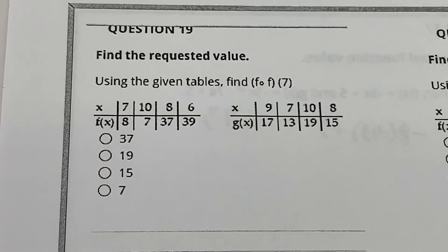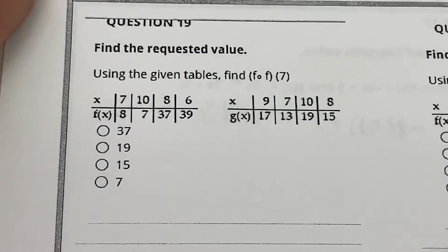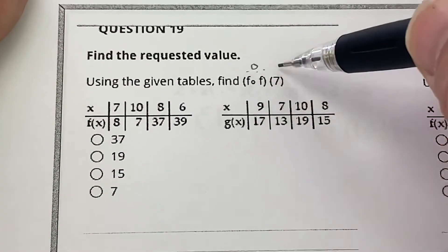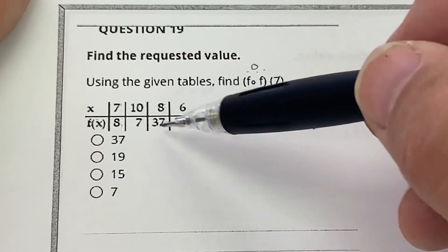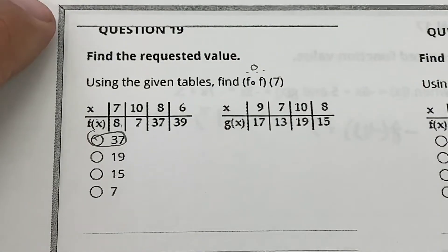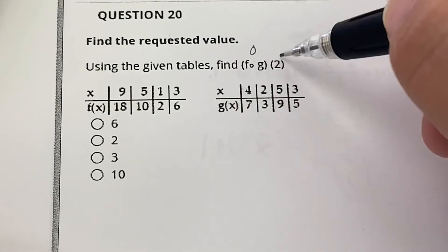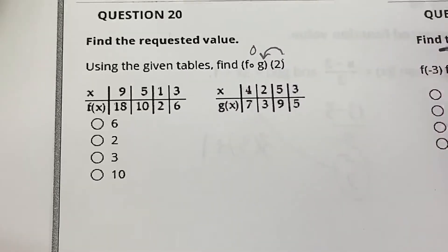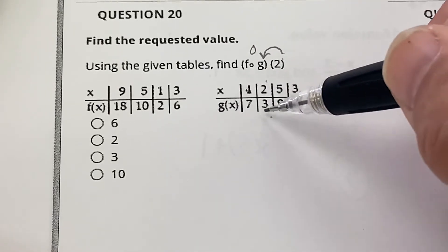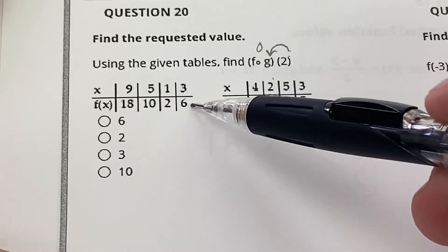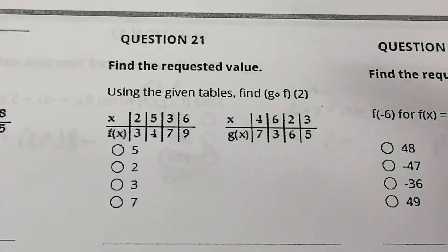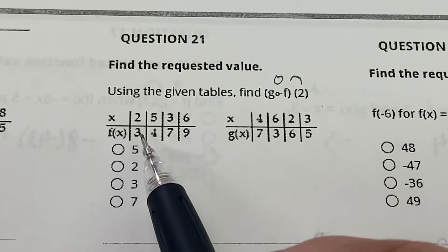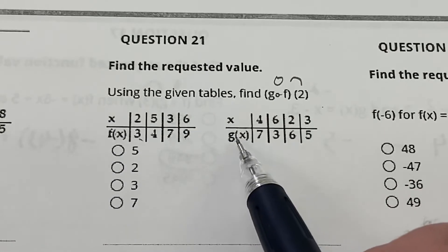Now tables — they're not that bad. For f ∘ f(7): f(7) = 8, then f(8) = 37. For f ∘ g(2): g(2) = 3, then f(3) = 6. For g ∘ f(2): put 2 into f first — f(2) = 3, then g(3) = 5.